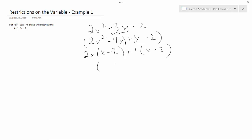Now, we can rewrite this again as 2x here plus 1, and then we have x minus 2 twice, so we can just write that once.